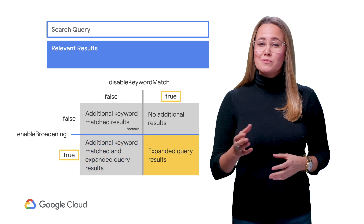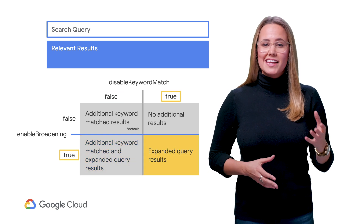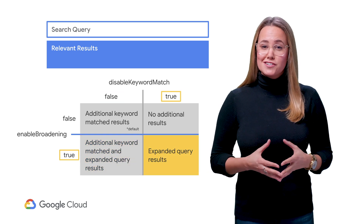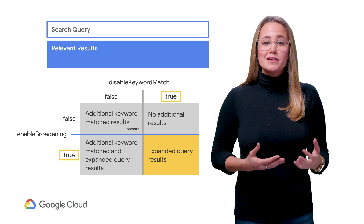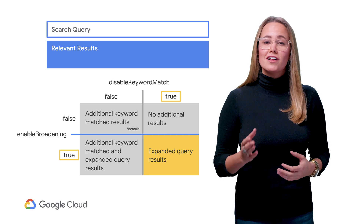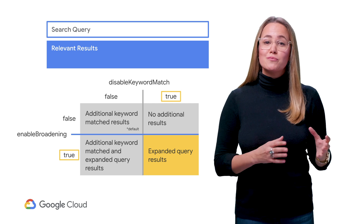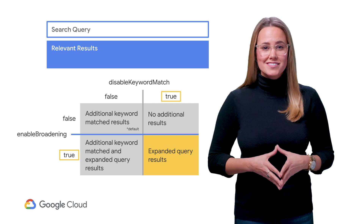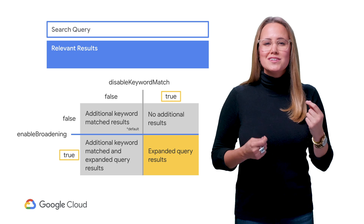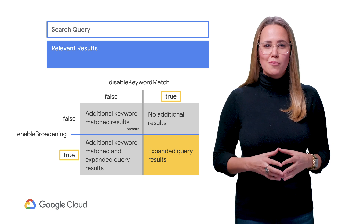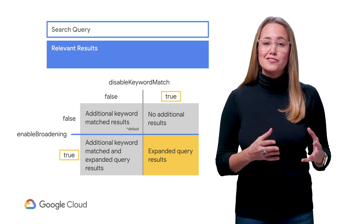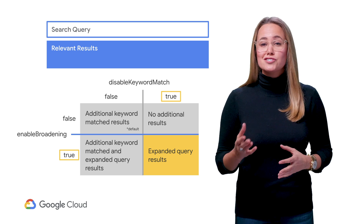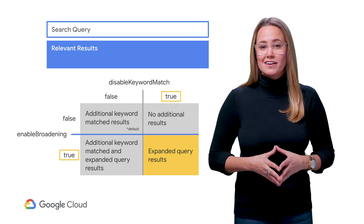Finally, if both Disable Keyword Match and Enable Broadening are set to true, search queries will return the most relevant jobs followed by only the expanded query results. You can see how these two properties can be used to influence jobs that get returned from a search query.